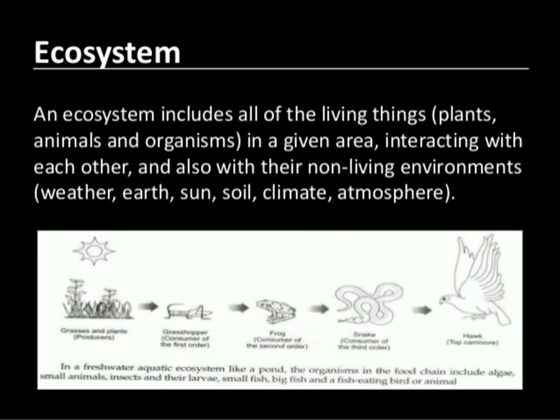Now we will discuss ecosystem. Ecosystem is formed by living and non-living organisms. It is an interaction of living and non-living organisms with each other and with their surroundings. For example: ponds, deserts, rivers, etc. Students, we have aquarium at home — yes, aquarium is an example of an artificial or manmade ecosystem.